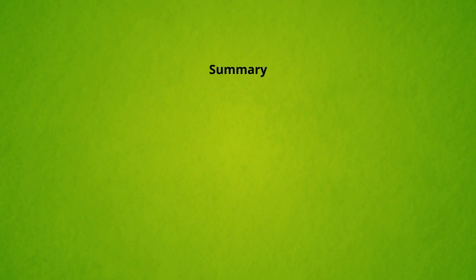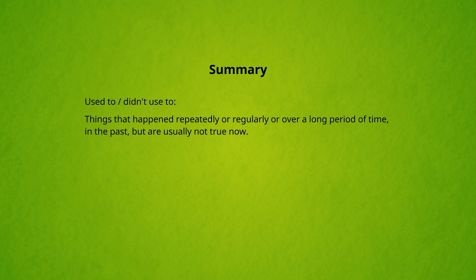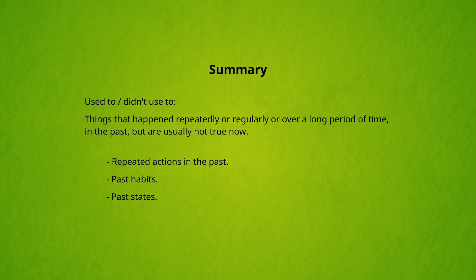In summary, we use 'used to' and 'didn't used to' to talk about things that happened repeatedly, regularly, or over a long period of time in the past — but these things are usually not true anymore. We use it for repeated actions in the past, past habits, past states, and past preferences, feelings, thoughts, ideas, etc.